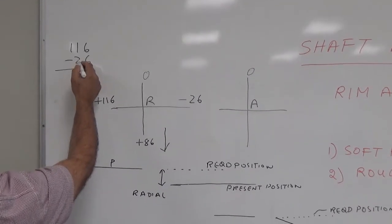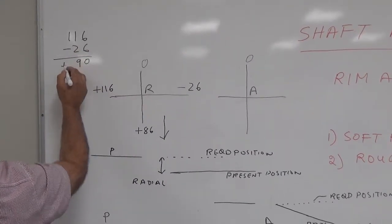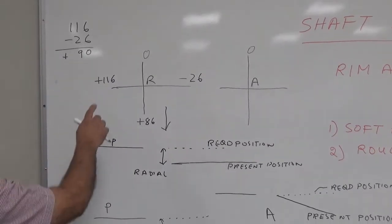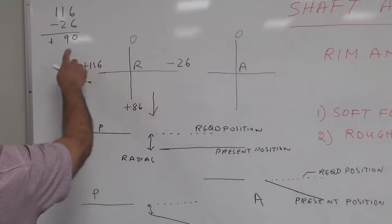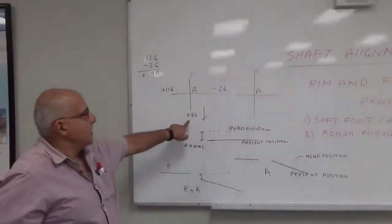11 minus 2 is 90 plus 90. Now 116 minus 26 is 90, and here the reading is 86.